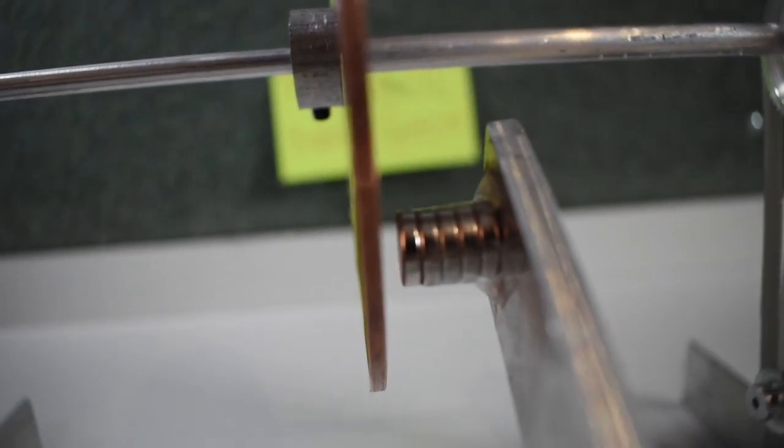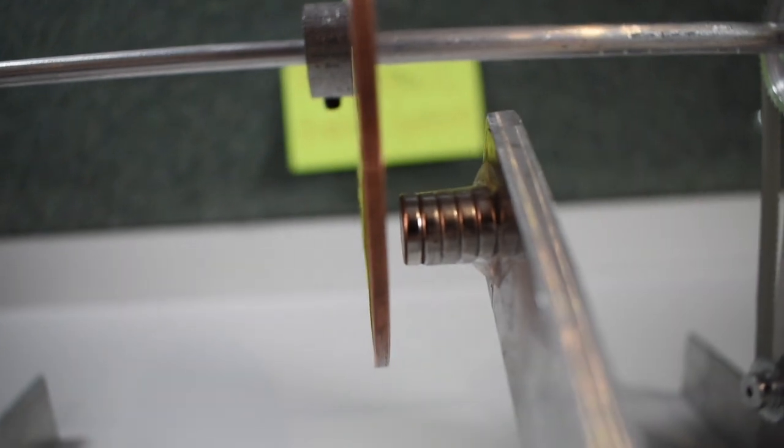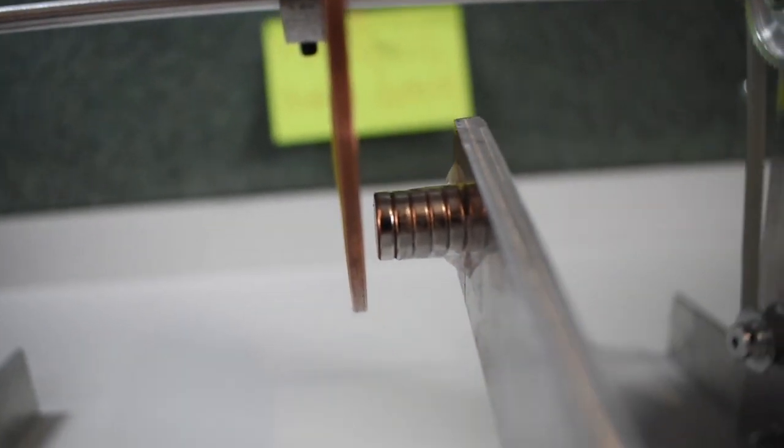Notice that the magnet is not making any contact with the rotor, and at zero speed the magnet does not attract the disc since copper is a non-ferrous and non-magnetic material.